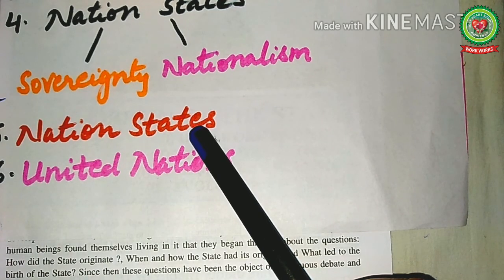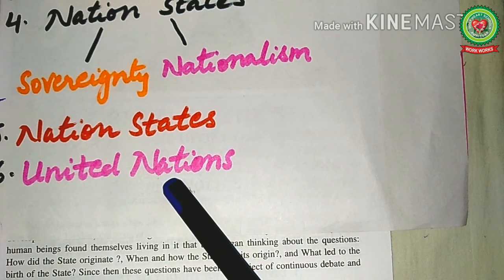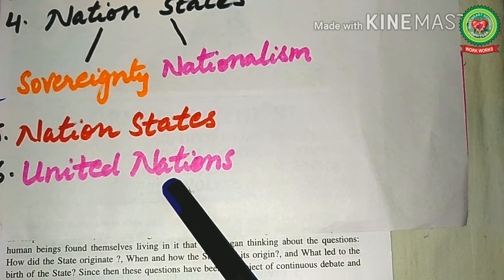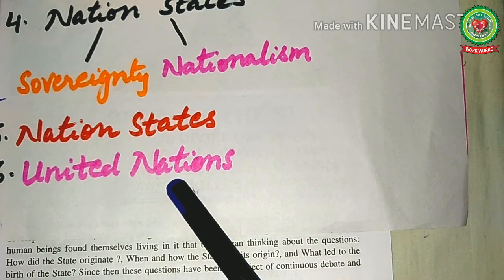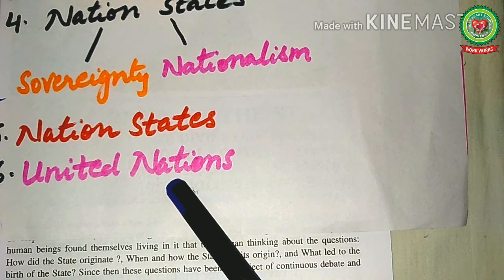All nation states have recognition by international organizations like the United Nations, and all matters of disputes between nations are solved by this organization. This finishes my topic — the evolutionary theory of the origin of the state — and also finishes Lesson 3: The Origin of the State.